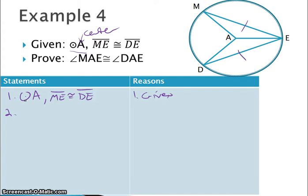Because I kind of see those look to be like maybe corresponding parts of triangles. So I have that AM is congruent to AD. And that is by all radii of a circle are congruent.